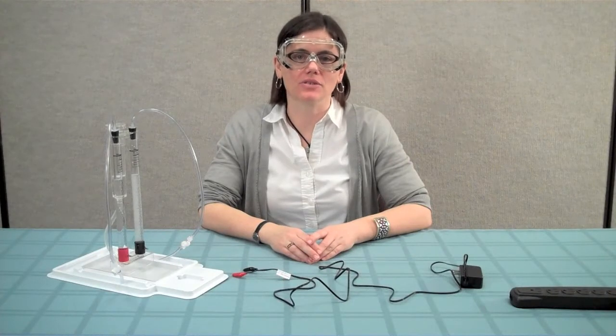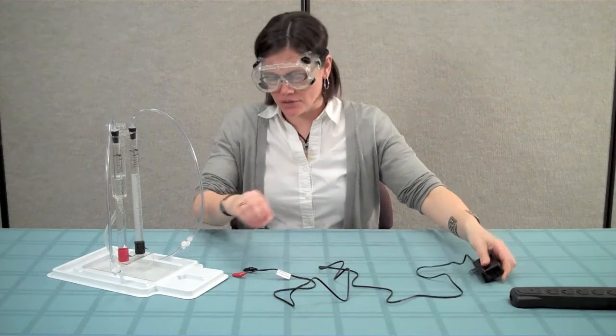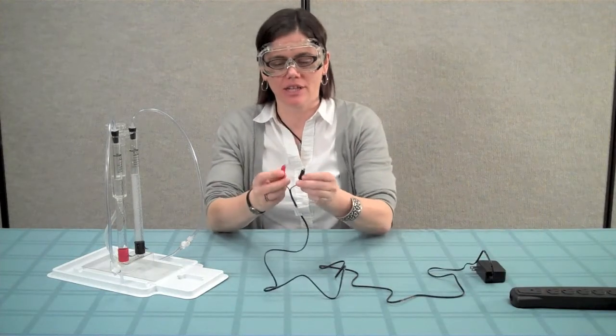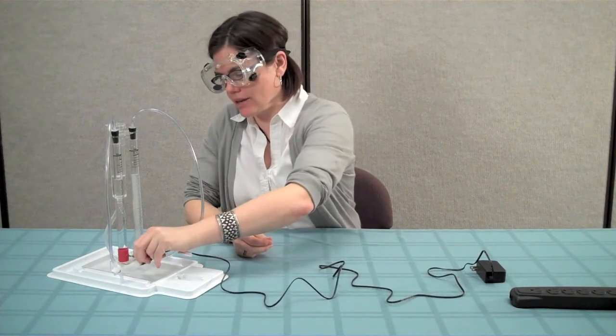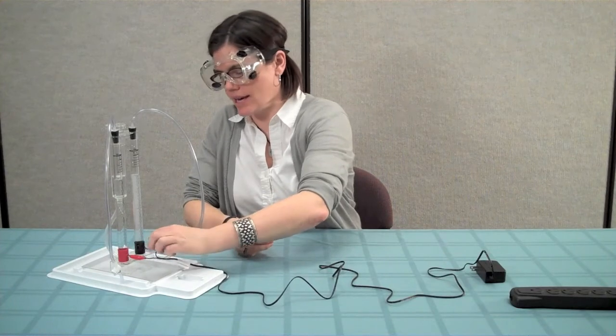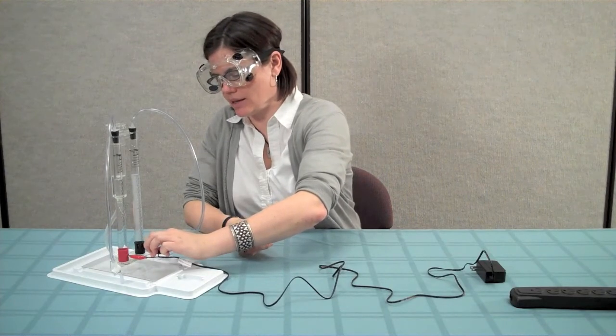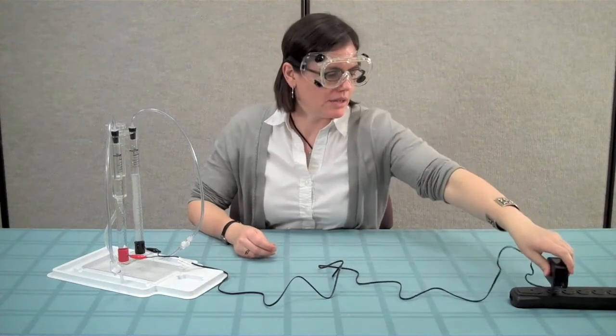When you are ready to connect the power supply to the electrolyzer, do not first plug the power supply into your outlet. If you do this and the alligator clips are touching, the power supply will short-circuit. Instead, first attach the red alligator clip to the red electrode on the electrolyzer, then attach the black alligator clip on the black electrode. Then you are ready to plug your power supply into an outlet.